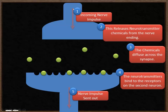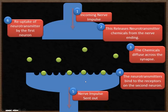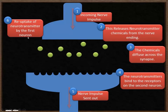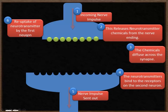Now if it finished like this, we would not be able to send a second nerve impulse across the synapse. So what has to happen next is these neurotransmitter chemicals are taken back to the first neuron — that's called reuptake. They go back to the first neuron, reuptake of the neurotransmitters, back to the starting point. That then allows the neuron to complete the entire process again.